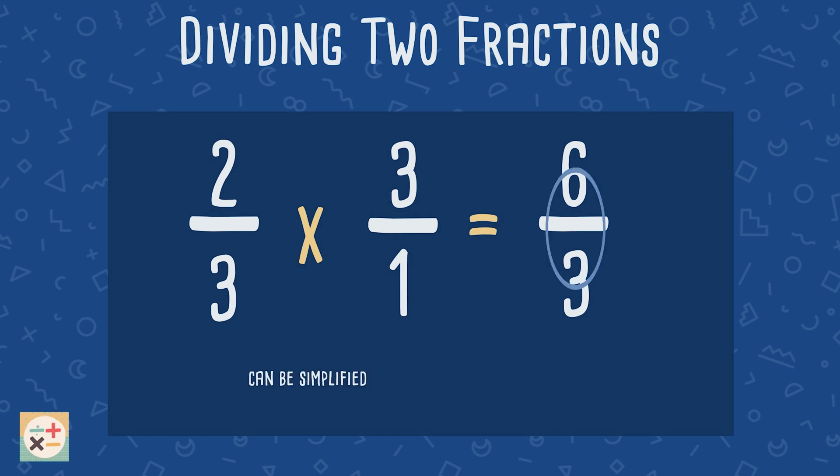Again, check to see if your answer can be simplified. Whenever a fraction has a denominator of one, it is a whole number. In fact, the numerator is the whole number.